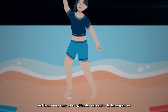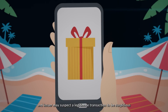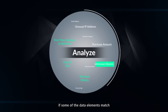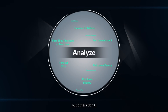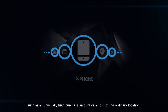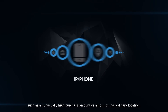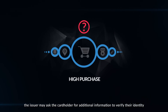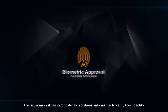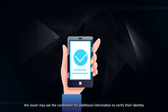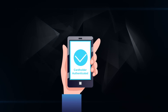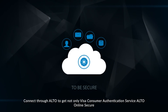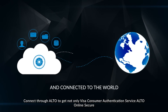In some instances — such as a cardholder traveling or making an unusual purchase — an issuer may suspect a legitimate transaction to be suspicious if some data elements match but others don't, such as an unusually high purchase amount or an out-of-the-ordinary location. The issuer may then ask the cardholder for additional information to verify their identity.